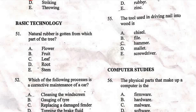Basic technology, question 51: 'Natural rubber is gotten from which part of the tree?' Options are: A) flower, B) fruit, C) leaf, D) root, E) stem. The right answer is E, the stem. The stem is the portion of the plant located above the ground that provides support to flowers, leaves, and buds, and also transports nutrients and water throughout the plant. Natural rubber is obtained from the sap or gum of rubber trees — this sap is also called latex, and it is a sticky, white-colored liquid.